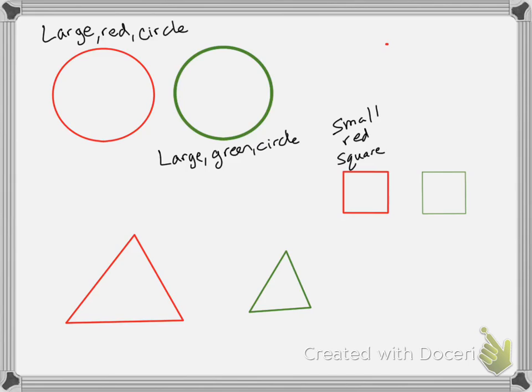Are there any other shapes that are exactly the same? No, but I have one that's almost like it, the one next to it here. This is a small green square.